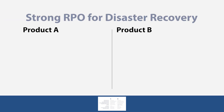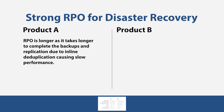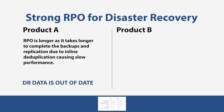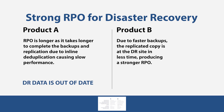Strong RPO for disaster recovery: Product A has a longer RPO as it takes longer to complete backups and replication due to inline deduplication causing slow performance — DR data is out of date. Product B benefits from faster backups, so the replicated copy arrives at the DR site in less time, producing a stronger RPO — DR data is more up to date.